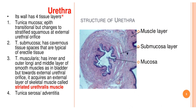In general, the urethra has four layers. The innermost layer is the tunica mucosa, consisting of epithelium. The second is the tunica submucosa, which has cavernous tissue spaces typical of erectile tissue in males. The third layer is the tunica muscularis. In males, there is an inner and outer longitudinal layer and a middle smooth muscle layer, as in the bladder, but towards the external urethra it becomes striated muscle. The outermost layer is the tunica serosa or tunica adventitia.